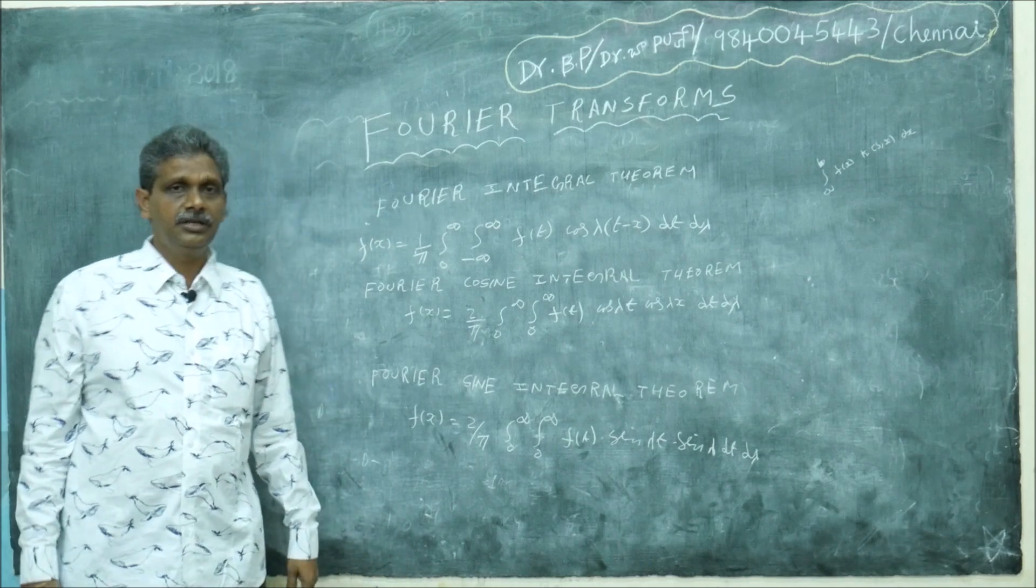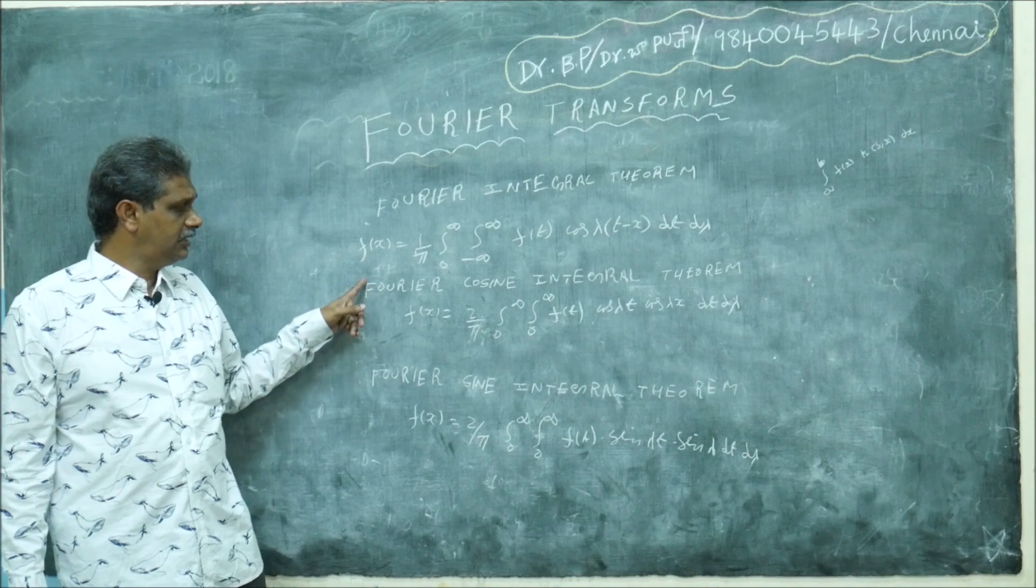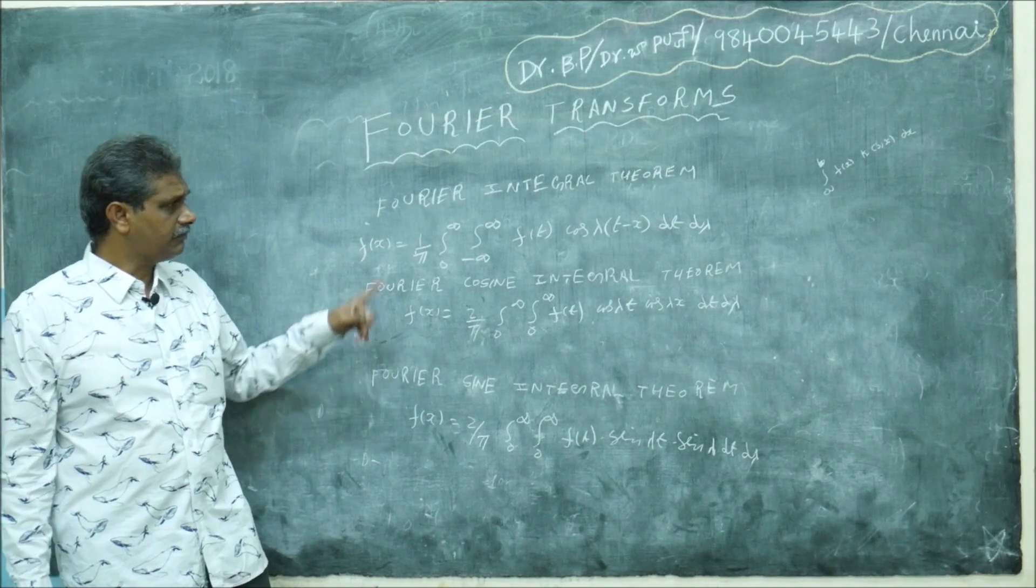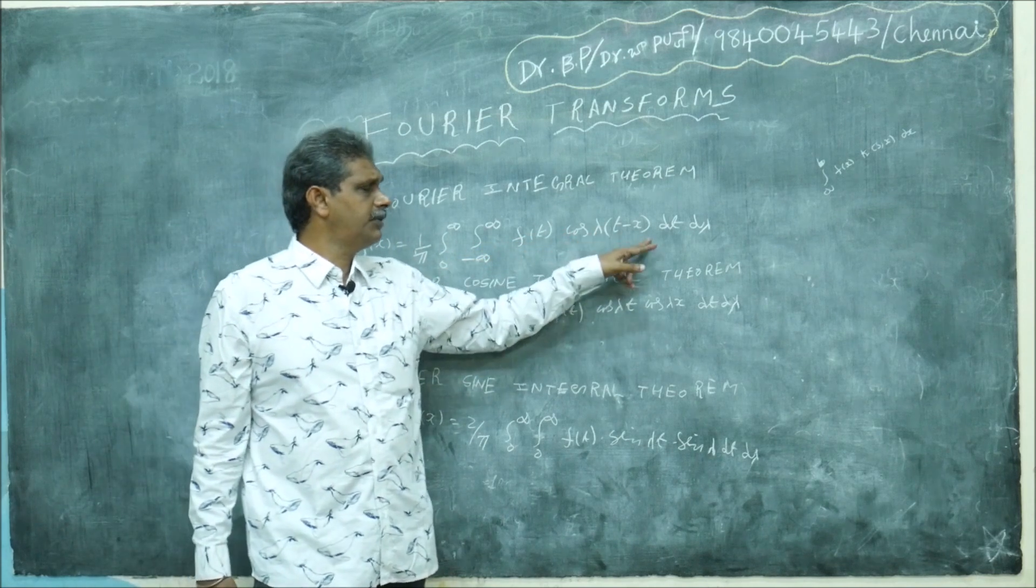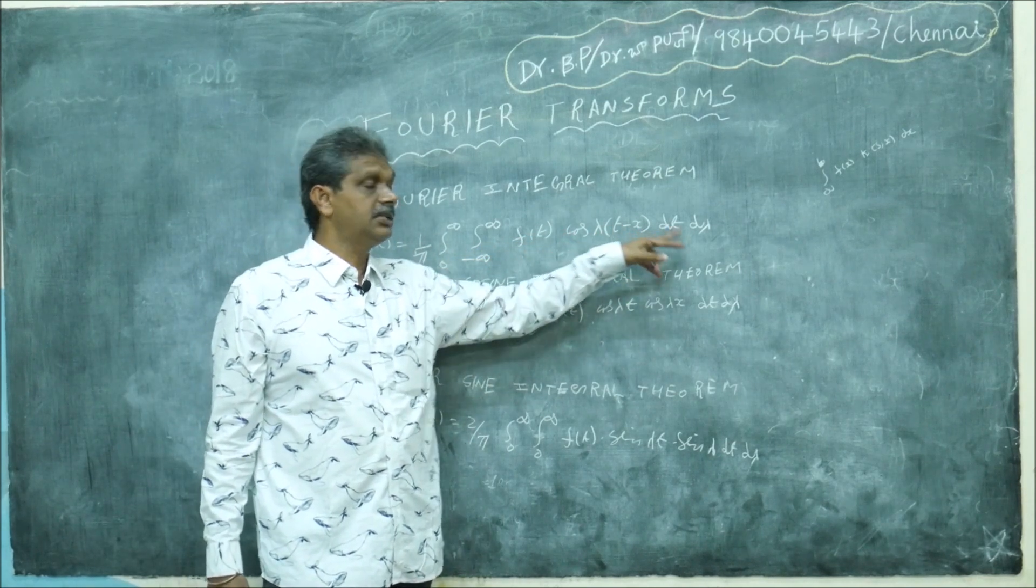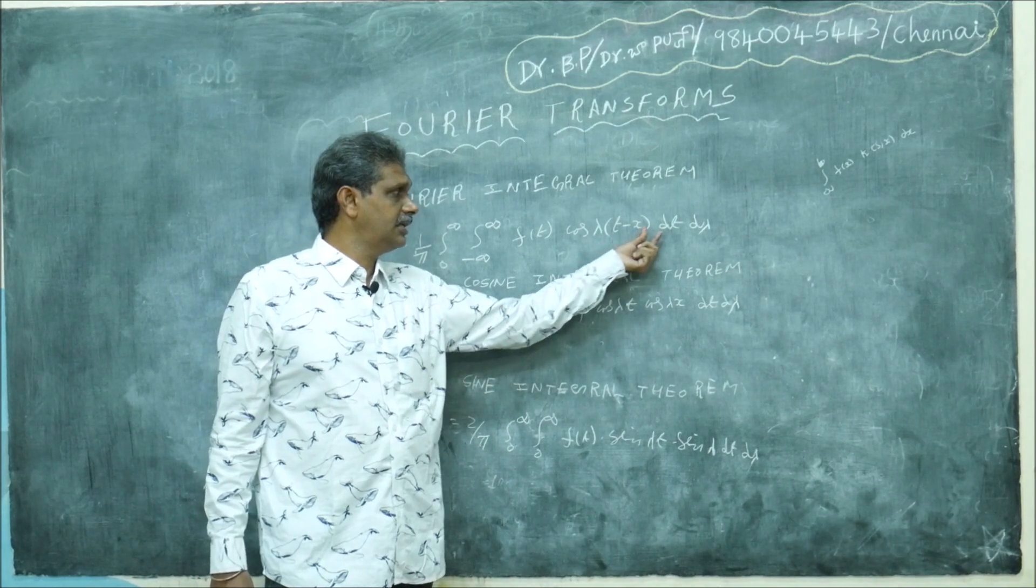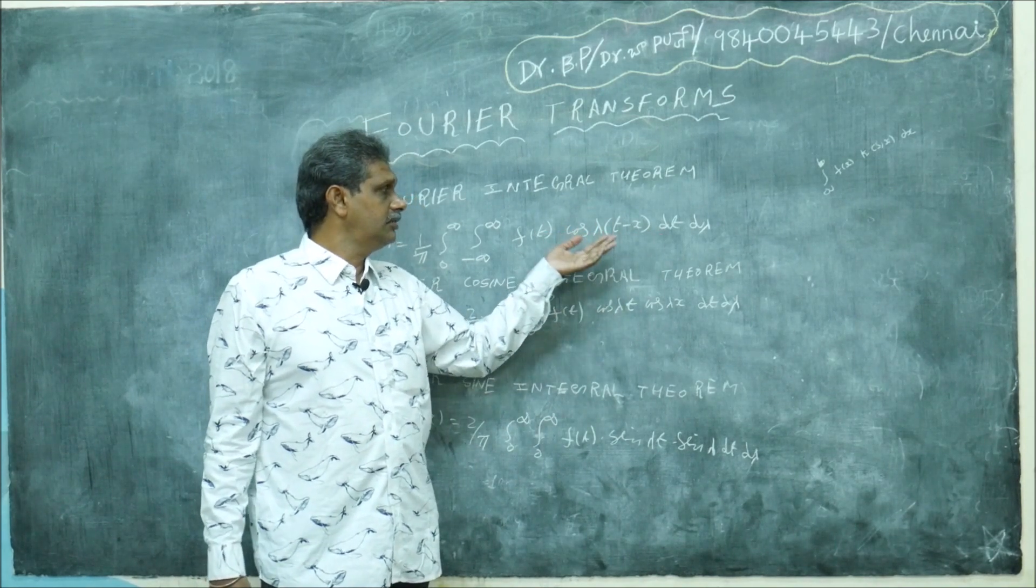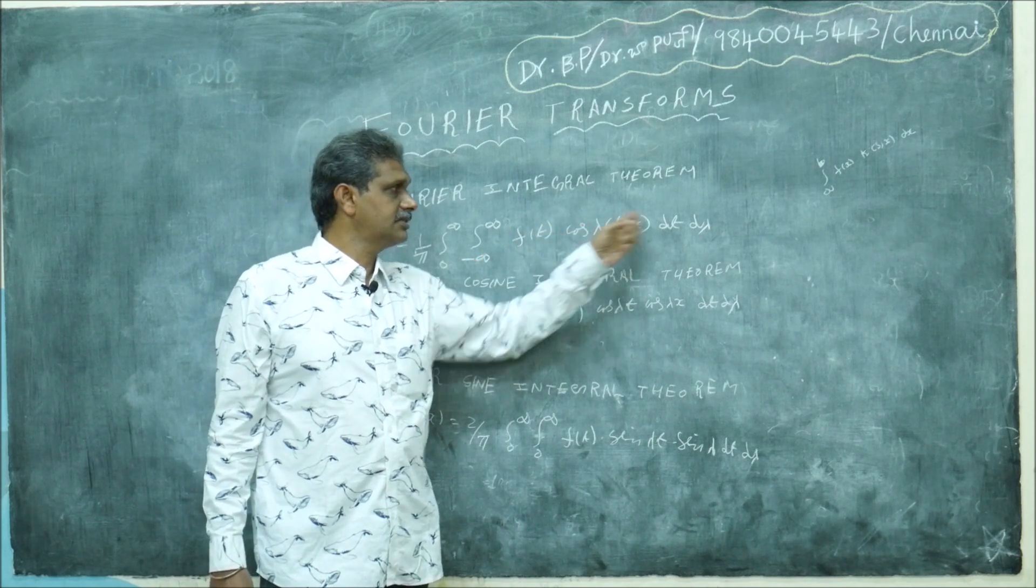From this they will define cosine integral and sine integral. How do you define cosine integral? If you expand cos(a-b), you get cos(a)cos(b) + sin(a)sin(b). If you expand cos(λt)cos(x), then you get sin(λt)sin(λx). Suppose f(t) is an even function—then only the cosine term stands, the sine term will vanish.